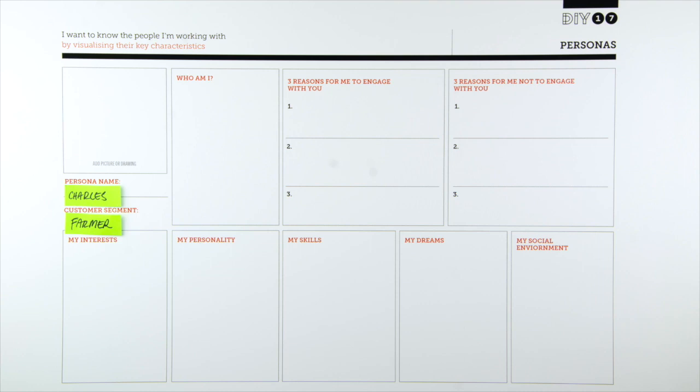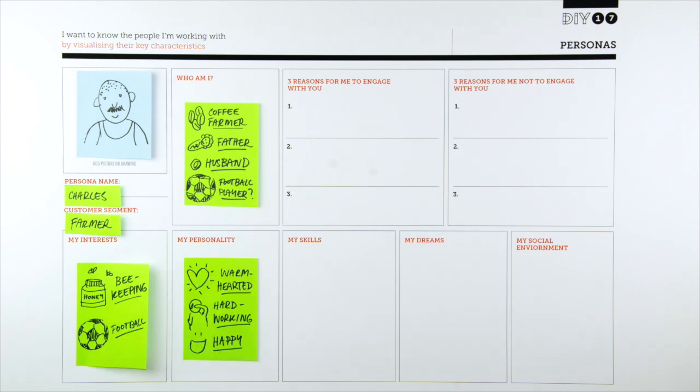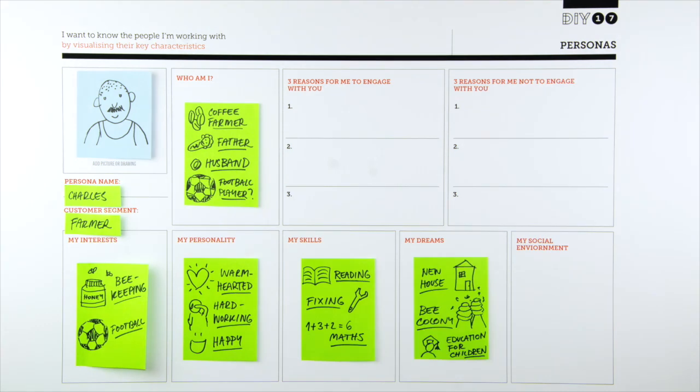He then imagines how Charles might look and draws a picture to bring him to life. Ben describes Charles according to what he's already learned about the farmers. He lists examples of what Charles does in his free time, what kind of person he is, what he can do, what his dreams are, and the people he engages with day to day.